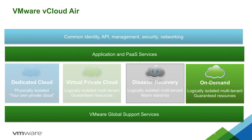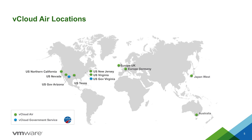And then last, we have on-demand. With on-demand, you're provided virtually unlimited data center resources and then billed by the hour based on your VM's actual consumption. Here's a quick look at the available vCloud Air locations. vCloud Air is available in seven locations throughout North America today, as well as Europe, Japan, and Australia. Stay tuned for announcements surrounding additional locations in 2015.